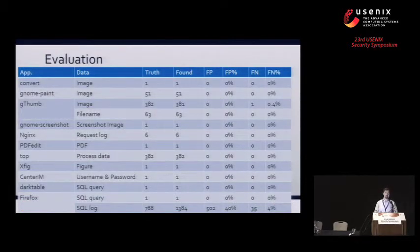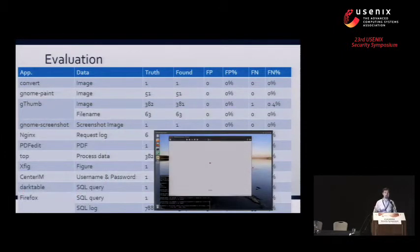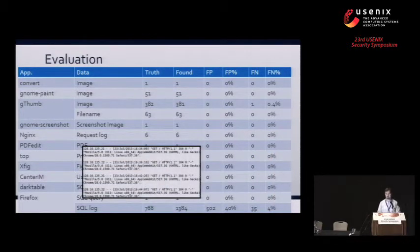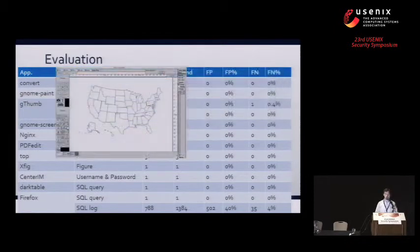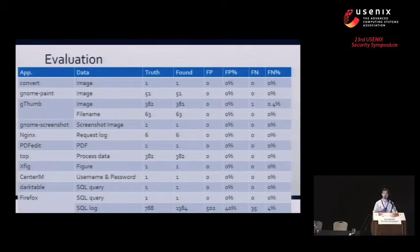We didn't just test Discrete with PDFs. We also used a variety of types of digital evidence, all of which require content reverse engineering to uncover their actual evidence. We did things like several image processors, as well as GNOME Screenshot — the default screenshotting application on most Linux distributions — request logs from an NGINX HTTP server, PDFs, process data rendered with the top utility, vector graphics drawn in the XFIG application, and others. As you can see, in almost all cases Discrete is perfectly accurate at finding and rendering this type of digital evidence — that is, no false positives and no false negatives. If you're interested in the few cases that do have false results, I'd be glad to talk to you about that offline.